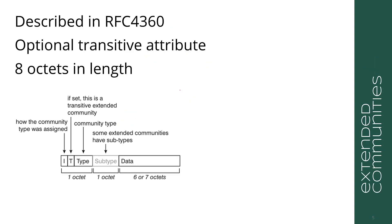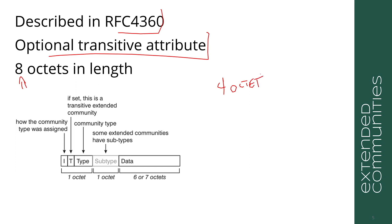Another kind of community is the extended community, described in RFC 4360. This is also an optional transitive attribute. Extended communities are eight octets in length instead of four. The primary reason for creating extended communities was the four-octet AS number — if the first part of a four-octet community encodes the originating AS, there's no room left for data. So a larger community type was needed.